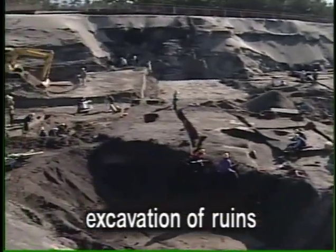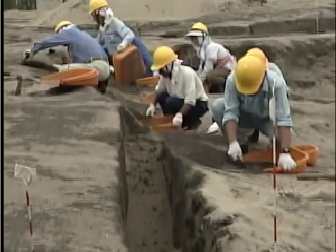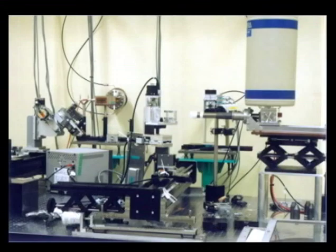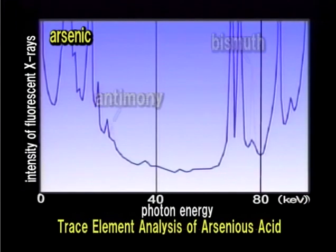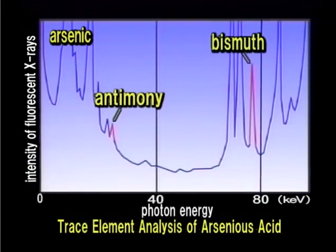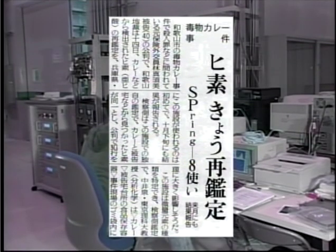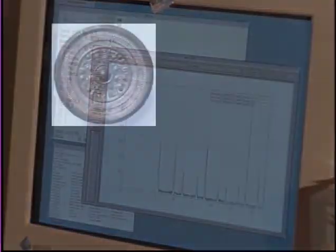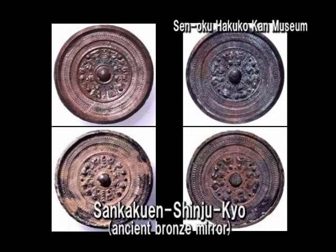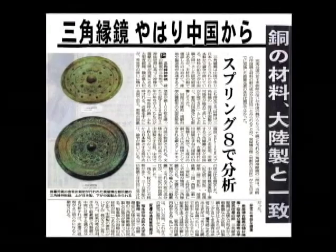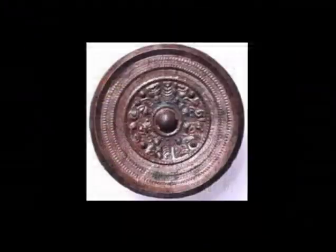Synchrotron radiation at Spring-8 is also used for forensic investigation and archaeological authentication of unearthed articles. X-ray fluorescence analysis is a highly sensitive and non-destructive method for such analyses, requiring only minute quantities to identify the elements present, including heavy elements which are difficult to analyze with conventional low-energy X-rays. Forensic studies performed at Spring-8 helped to identify arsenic in the curry poisoning case in Wakayama Prefecture. In archaeological research, synchrotron radiation was used to determine the composition of the Sankaku-en Shinjuku-kyo mirror that might have been used by the ancient queen Himiko.